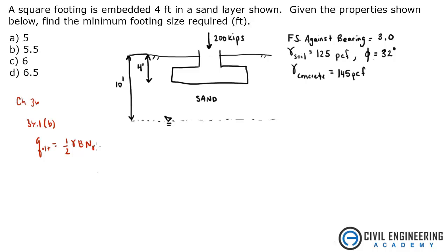This is a factor we have to look up for the internal friction angle it's associated with. Plus c n c, same thing, plus p q, which is a surcharge if applied, which we don't have, plus gamma df, which is depth of footing, times nq, another factor. So n gamma, n c, n q all have to do with the friction angle.